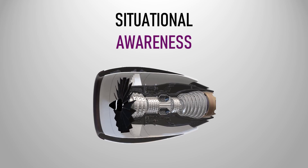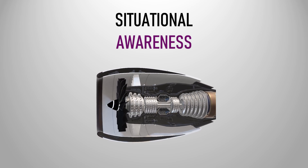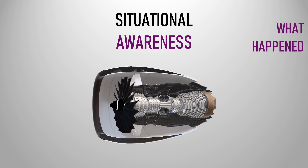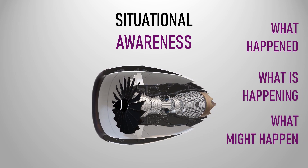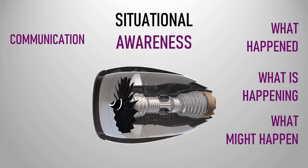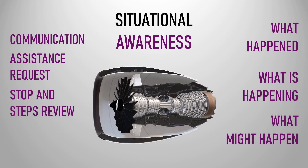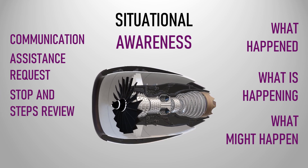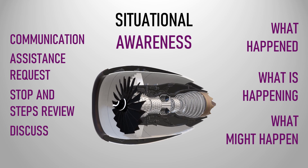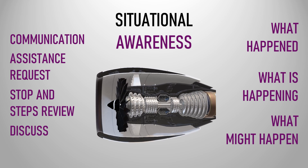To reduce errors, we must take into account what is happening around us, because our actions can lead to dangerous or undesirable situations. For this, we must know what happened, what is happening, and what might happen. To achieve this, it is necessary to have clear and transparent communication, assistance requests if necessary, and even stop the machine and have steps reviewed to ensure the path of the procedure and support correct decision-making.